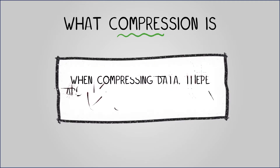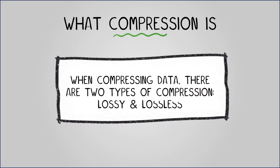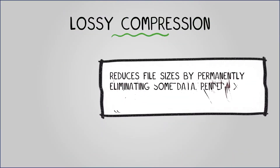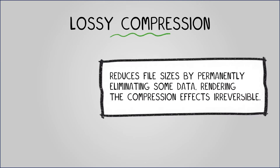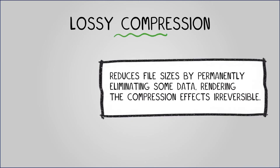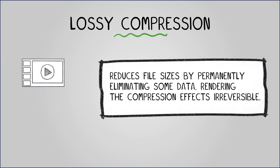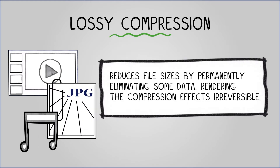When compressing data, there are actually two different types of compression: lossy and lossless. Lossy compression reduces file sizes by permanently eliminating some data, rendering the compression effects irreversible. It is widely used for video, audio, and image compression, such as in JPEG files.